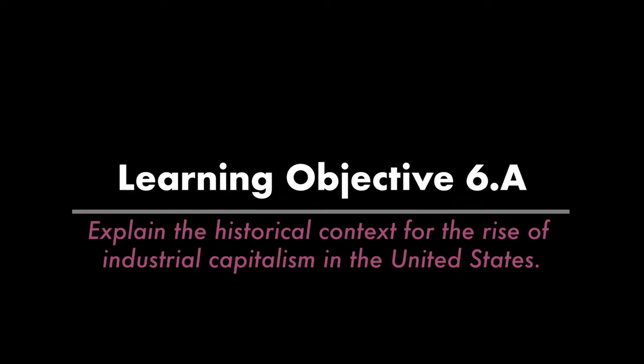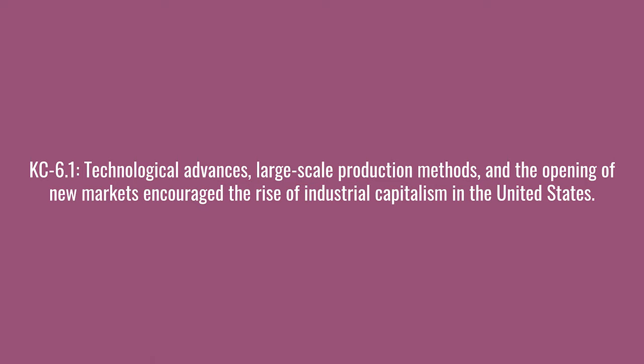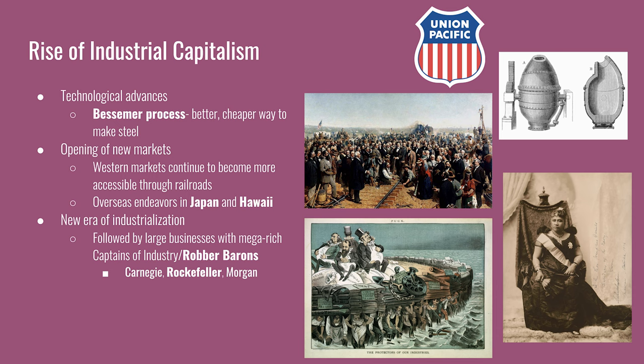The rise of industrial capitalism is going to be one of the biggest developments of period 6, and it's going to affect various other parts of society. The first key concept says technological advances, large-scale production methods, and the opening of new markets encourage the rise of industrial capitalism in the United States. This answers the learning objective as directly as possible. One of the biggest technological developments of the period is the Bessemer process.